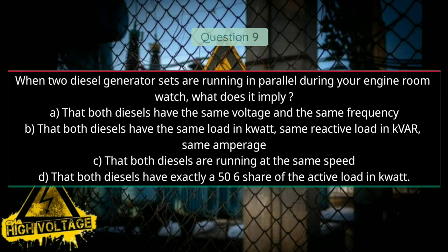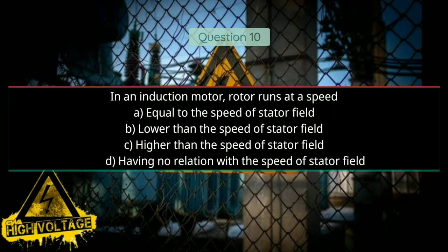Question number nine: When two diesel generator sets are running in parallel during your engine room watch, what does it imply? Option A: that both have the same voltage and the same frequency, Option B: same load in kilowatt, same reactive load in kVAR, and same amperes, Option C: that both diesel engines are running at same speed, Option D: that both have exactly 50% share of active loading. Correct answer will be A, same voltage and same frequency.